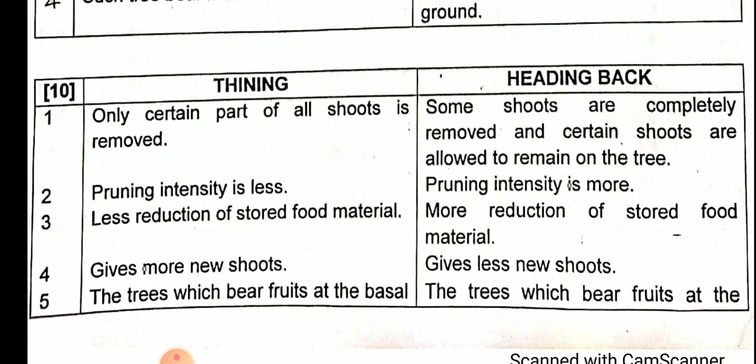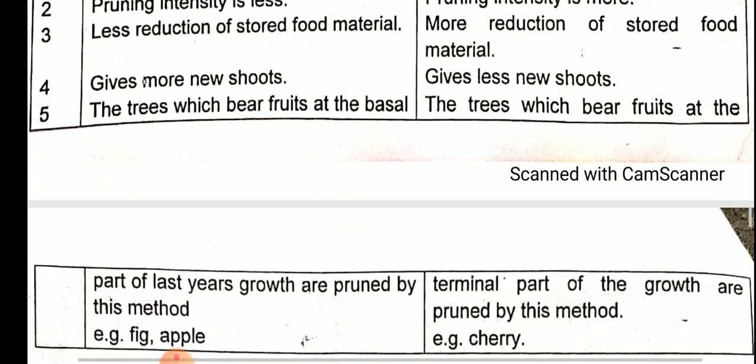The next point: in thinning, it gives more new shoots because less pruning is done — only some parts are cut. In heading back, some branches are completely removed, so there are fewer new shoots. In thinning, trees which bear fruits at the basal part of last year's growth are pruned by this method.